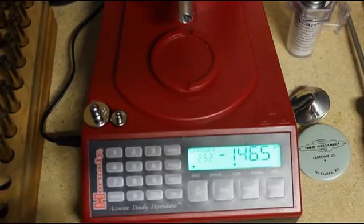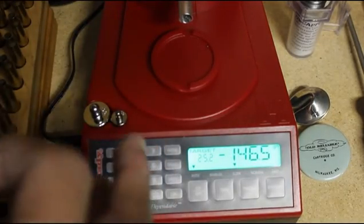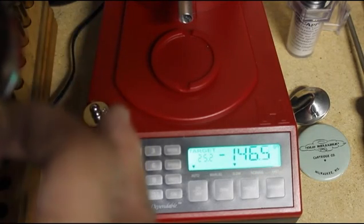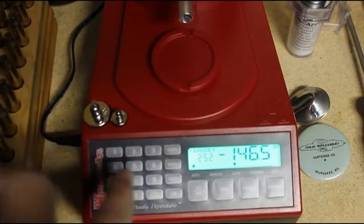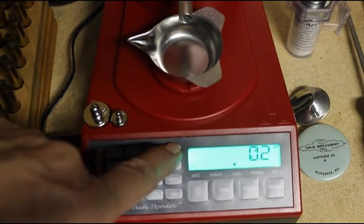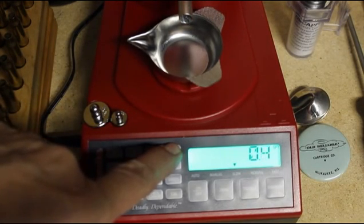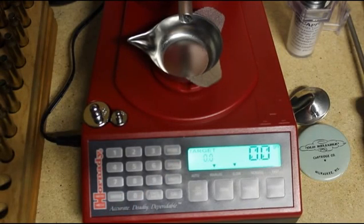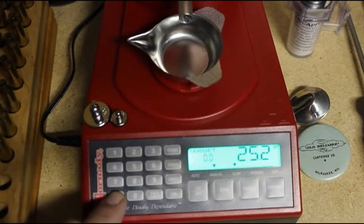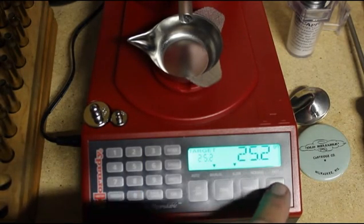Now, we could set the point of trickle a little bit closer to the final so we don't waste as much time. Then we hold the mode button down again, and then there's 0.2, 0.4. We'll leave it at 0.4. Then we have to enter the charge again, put that into memory, and then press dispense.